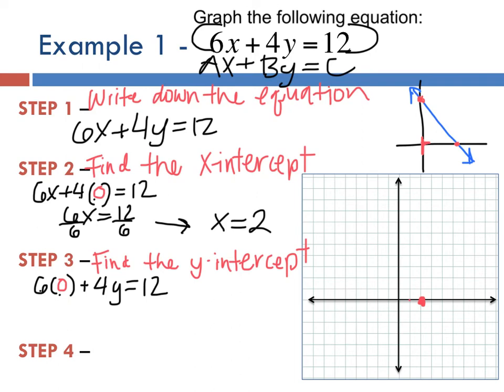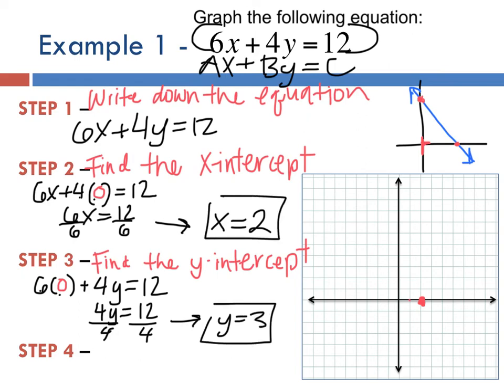Six times zero is also zero, so 4y = 12. To get y by itself, divide both sides by 4. Y = 3. That's our second point. We have x = 2 and y = 3. Step 4 is the easiest part: draw the line, connect the two points. X = 2 is over here, y = 3 is right there. Connect those two points and that's our line.